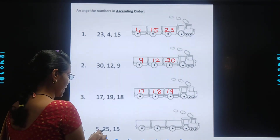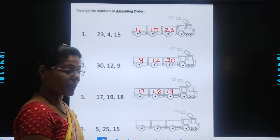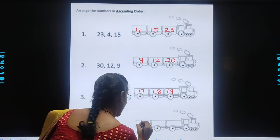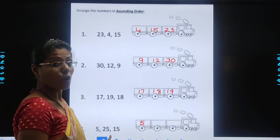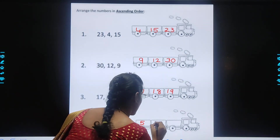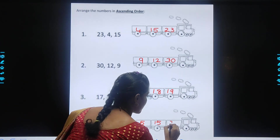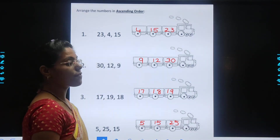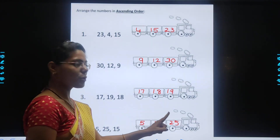Now 5, 25 and 15. So which is the smallest number over here? Sabzi chota number kamsa hai? 5. Okay. Then which number will come? 25? No. 15? Yes. And at last we will write 25. So kids, we have arranged these numbers in ascending order from smallest to biggest.